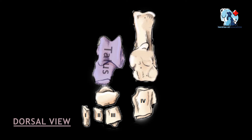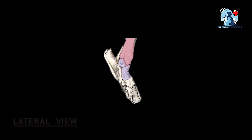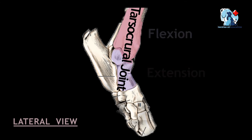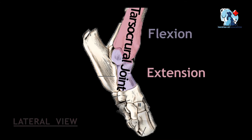If we look at the talus bone, you can see that it has a trochlea on its proximal end. This trochlea actually articulates with the tibial cochlea, which is discussed in the anatomy of the tibia. The joint between the trochlea and the tibial cochlea is called the tarsocrural joint, and it is responsible for flexion and extension between the leg and pes.